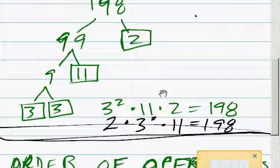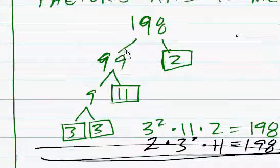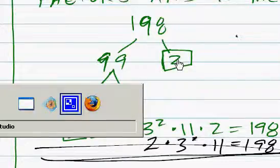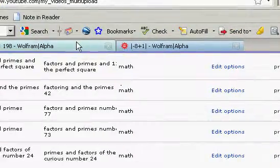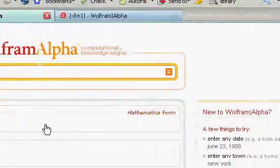Let's take a look at Wolfram Alpha and see what Wolfram Alpha thinks of it. And here's the lucky number, 198. Here's how you write it.